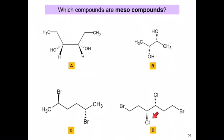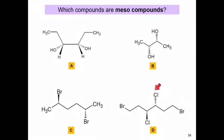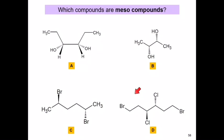For the fourth molecule, we have two stereogenic centers containing four different groups each. The bromine on one carbon is pointing up and the bromine on the other is pointing down. One chlorine is facing towards the front and the other towards the back. The single bond can be rotated so that the chlorine will be pointing up and the bromine pointing down, making that chlorine also face towards the back. Now we have an internal plane of symmetry, which makes compound D a meso compound as well.